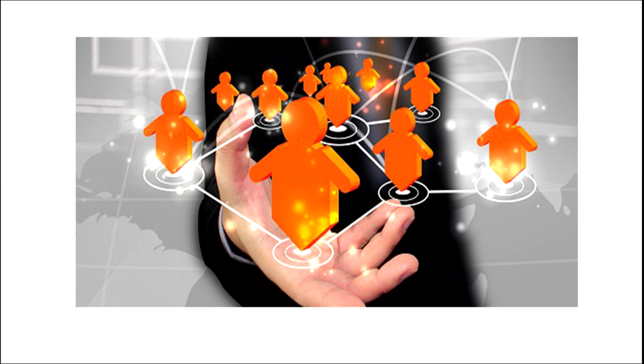Now look at the image. Can you see that a hand is shown where various people are standing on a concentric circle? The concentric circles represent the limits of the employees, and each circle is interconnected with the other. That means all the employees are interconnected and are looked after and led by a leader who manages all their working.